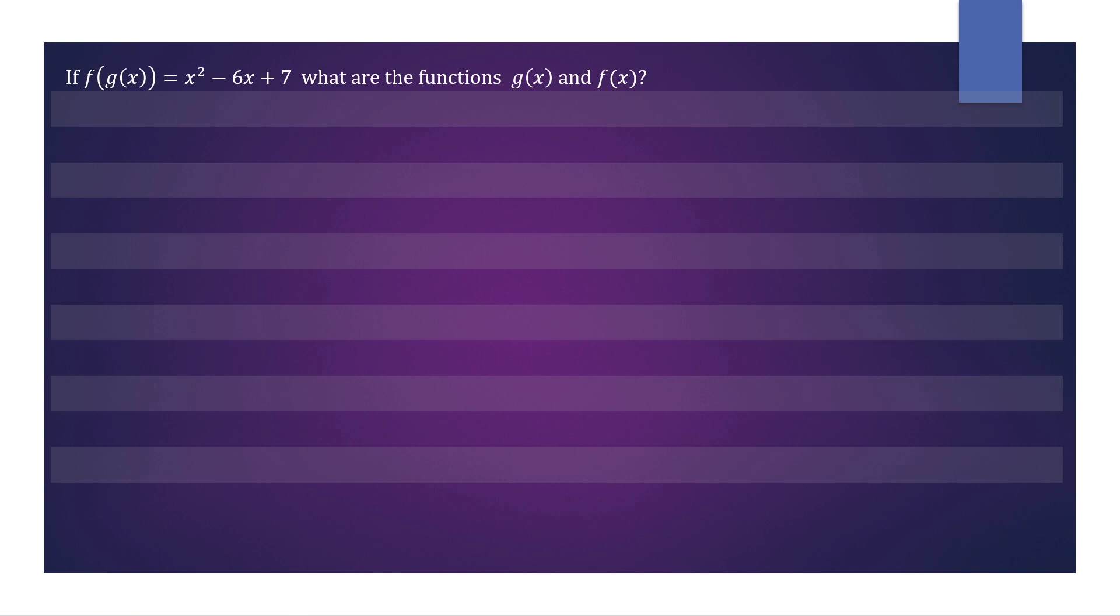Hi everyone, we have a composite function which is x squared minus 6x plus 7 and we want to determine what the functions g(x) and f(x) are.